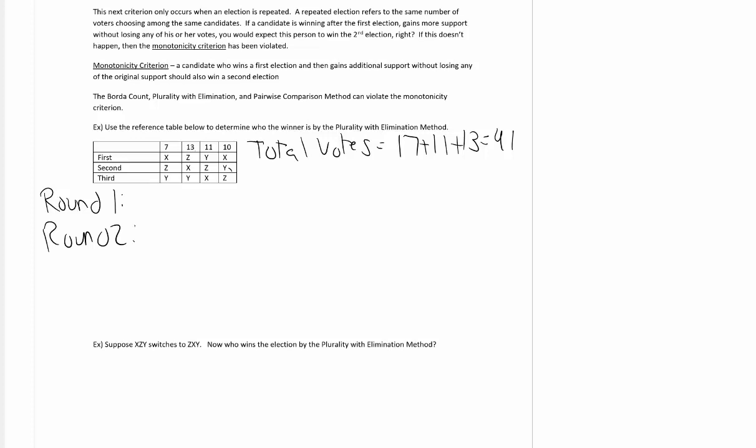In this video we're going to continue our discussion with flaws of voting. The next one I want to talk about is the monotonicity criterion. This is when a candidate who wins the first election and then gains additional support without losing any of the original support should also win a second election.